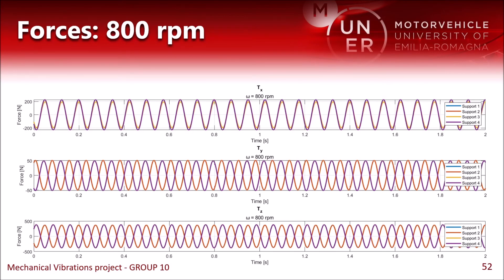The forces transmitted at 800 rpm are quite high, especially the vertical force, so this suggests that this speed is not particularly suitable for an idle speed, and should be avoided.